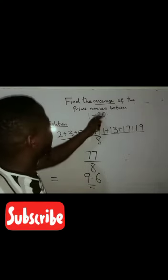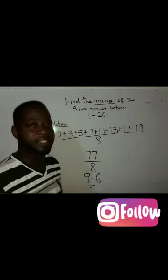So, the average of the prime numbers between 1 to 20 is 9.6. Thanks for watching.